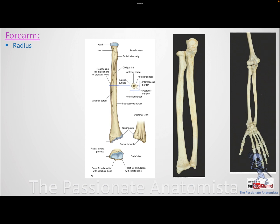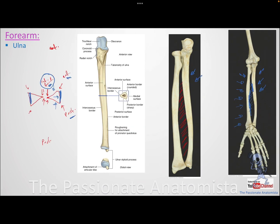Now moving to the distal part of both bones. Both have a pillar-like process — 'styloid' in Latin or Greek means pillar-like. We have the styloid process of the radius and the styloid process of the ulna. This helps you hold the bone in an anatomically correct position: since the radius is lateral, its styloid process is lateral, and since the ulna is medial, its styloid process is medial.